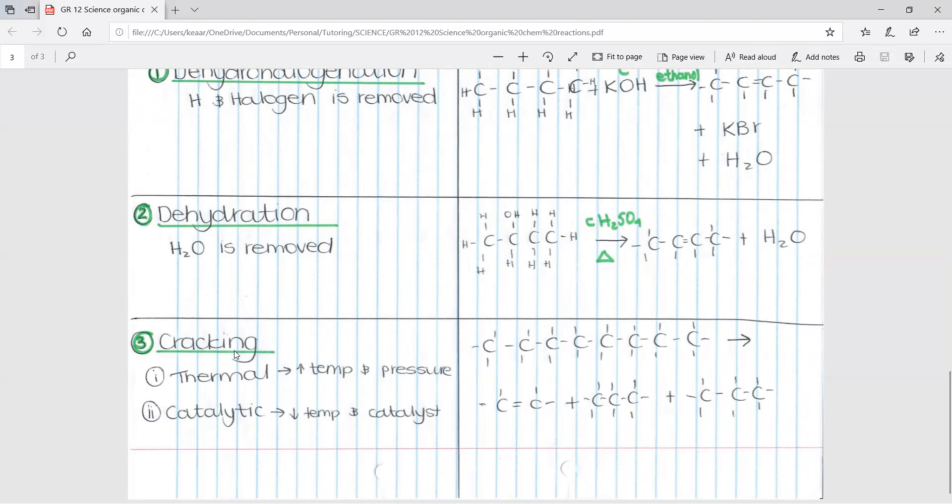The last type is called cracking. You get two types of cracking. Thermal cracking, which is under high temperatures and high pressure. Or you get catalytic cracking, which is under low temperatures but uses a catalyst. Basically cracking is breaking up these long chains of carbon molecules into shorter and more useful ones. The definition of this is found in the guidelines, which is also very important. So as you can see, this long chain of carbon carbon molecules has been broken down into separate ones. Some form double bonds, some don't. Some can form triple bonds, all depending on the type of reaction.